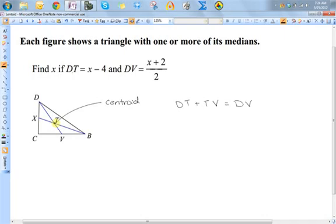However, because this is a centroid, I know that the length of this segment from the vertex to the centroid is twice the length of this segment here from the centroid to the midpoint. So I know that DT is equal to twice TV. Well, if I wanted to write this in terms of DT, because I want to substitute an expression for DT and for TV, I know that one-half of DT is equal to TV.